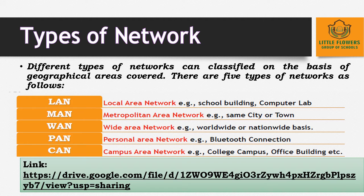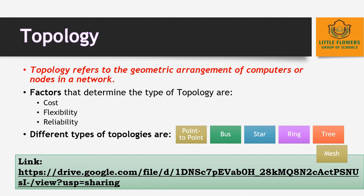Next is PAN, Personal Area Network. PAN is a computer network mainly created for an individual person. It is used for communication among personal devices like laptops, mobiles, and PDAs. Then there is CAN, Campus Area Network. Campus area network works within a campus only, for a short distance — such as a college campus, school campus, or office building. These are the different types of networks.